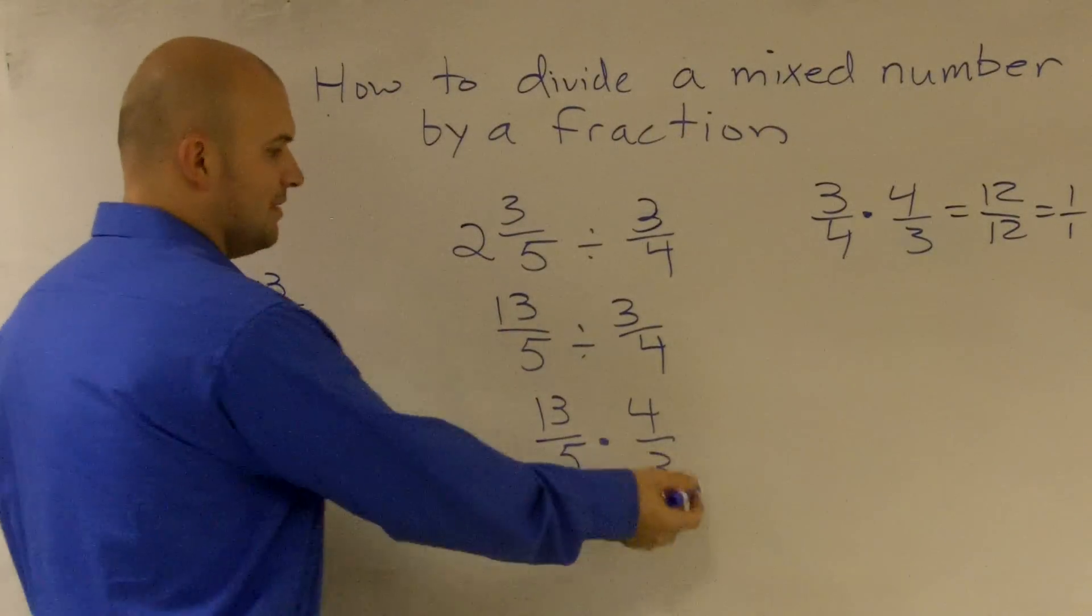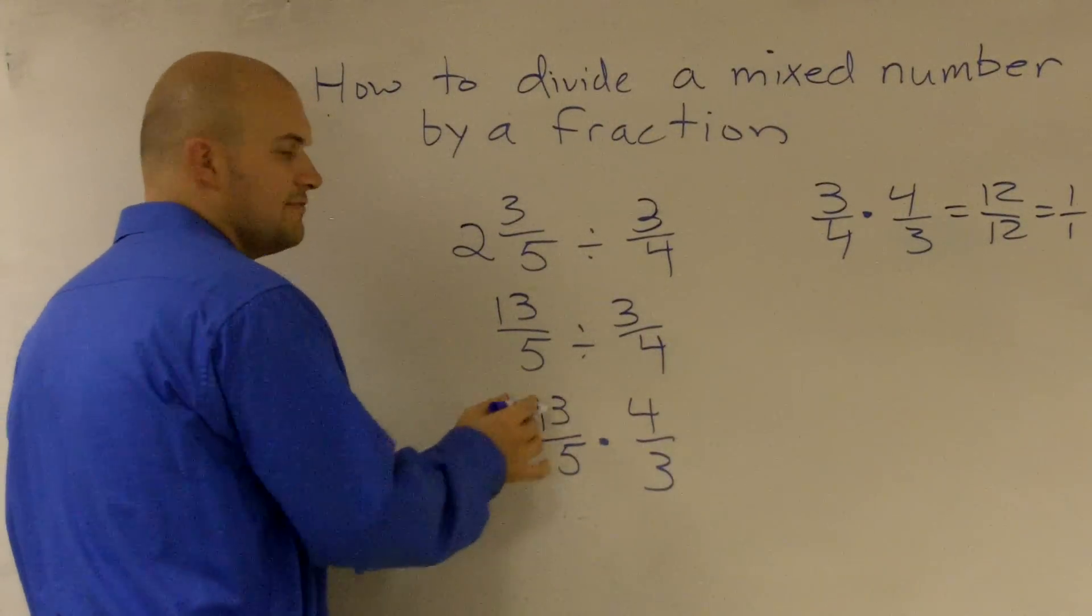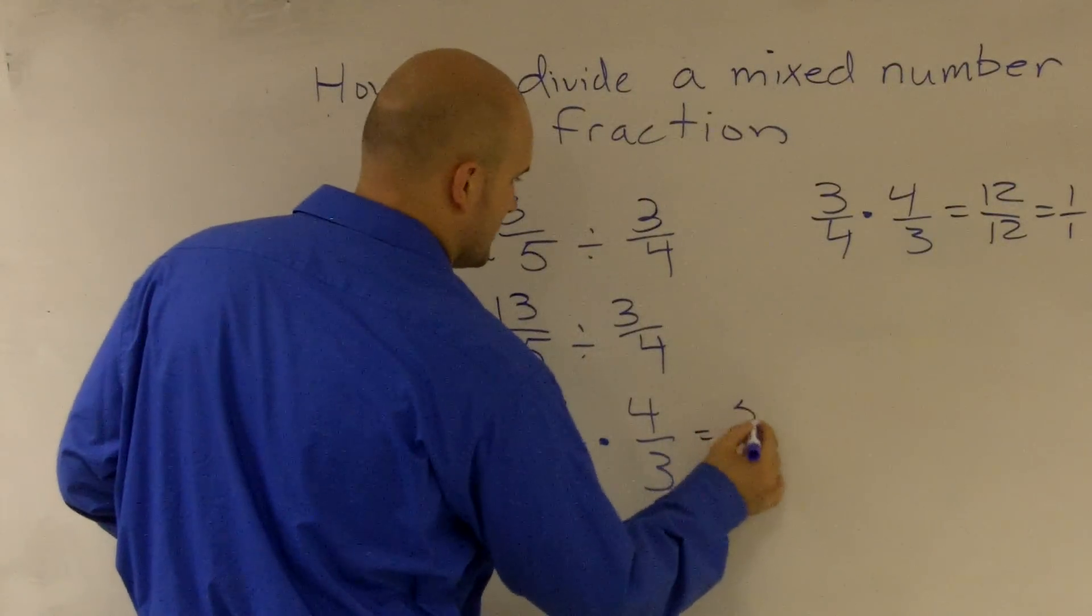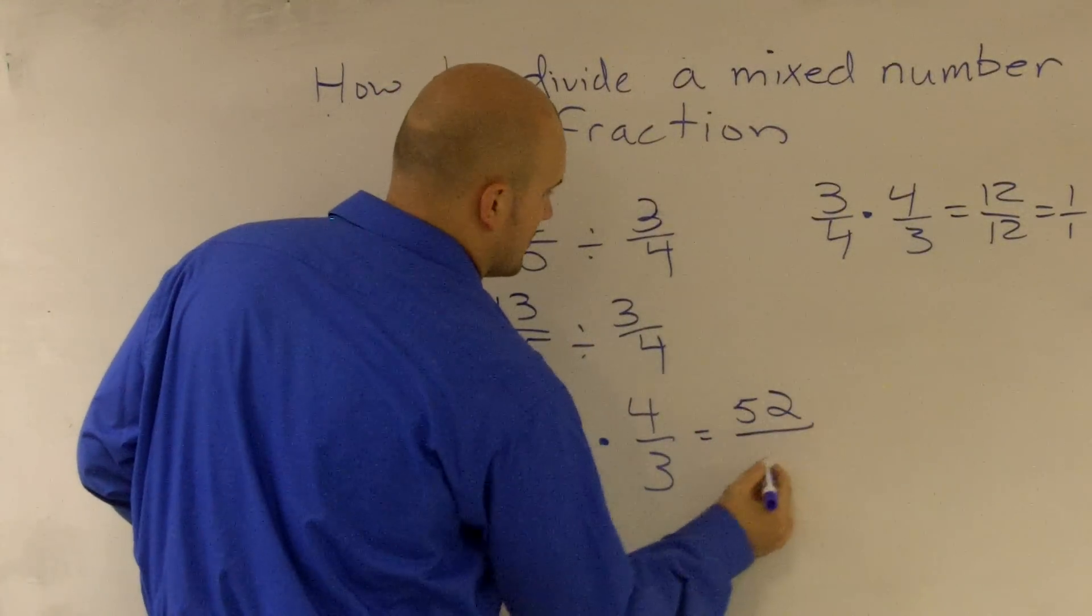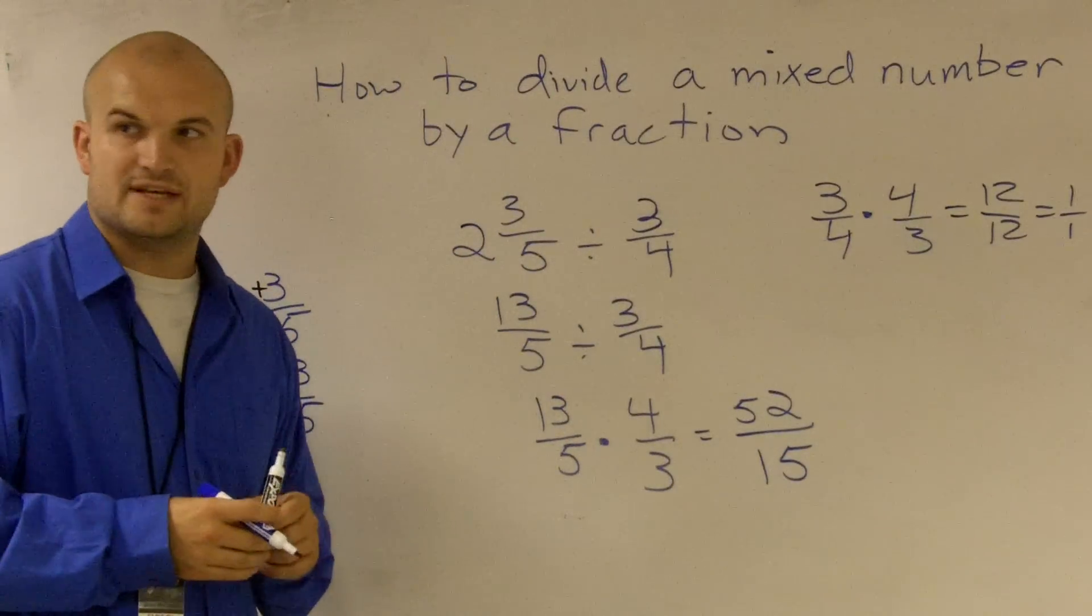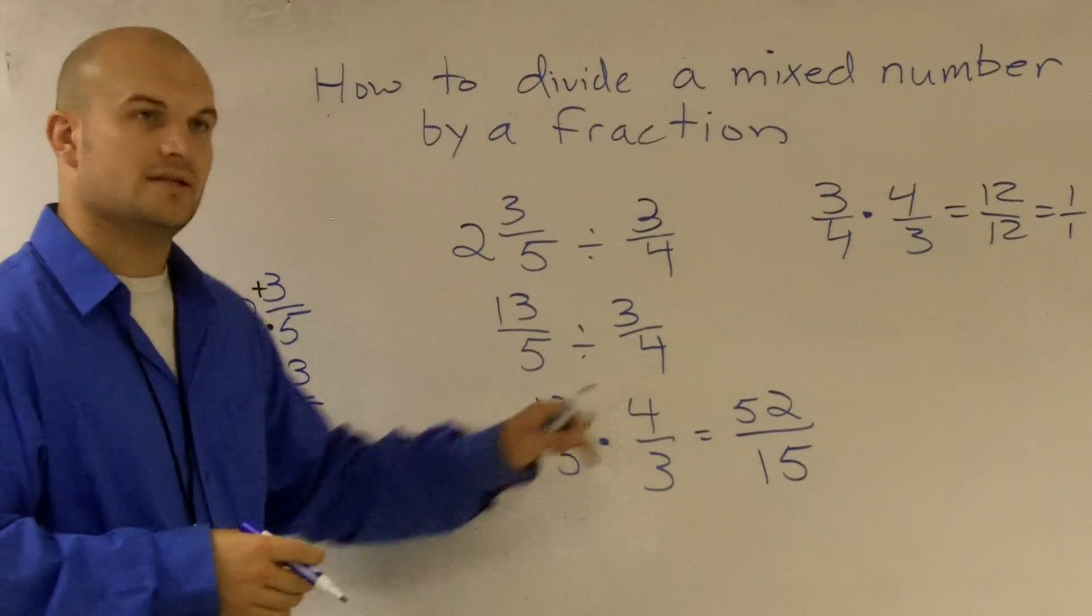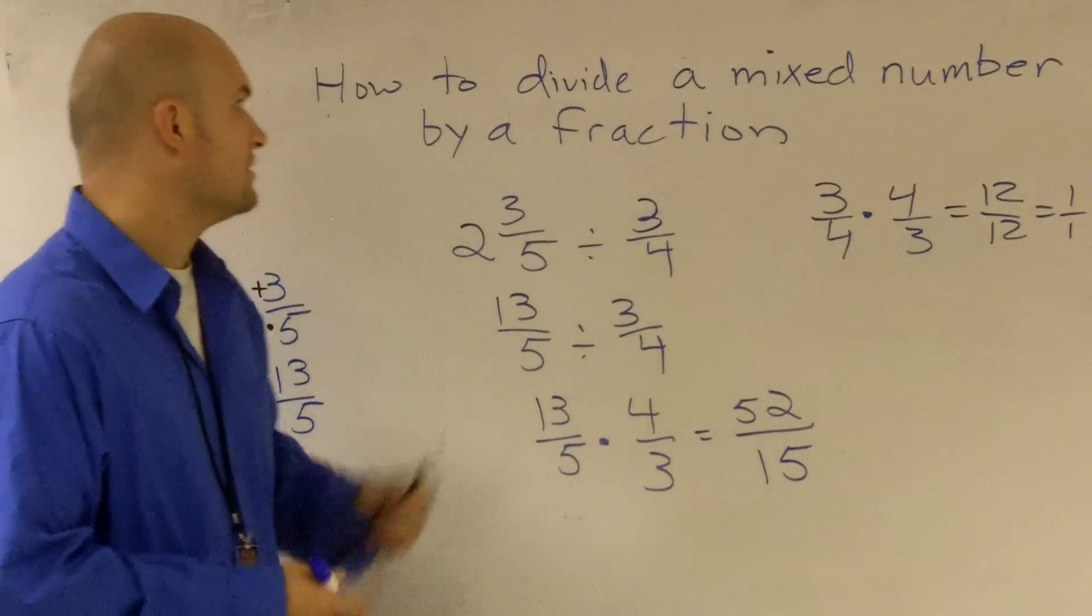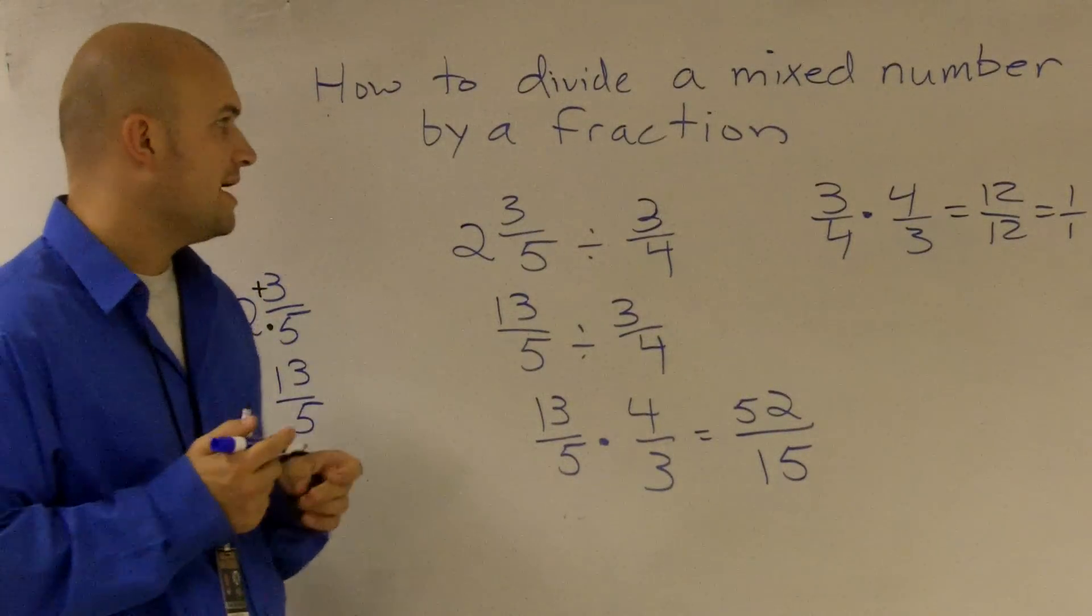So I multiply by the reciprocal and have 13 times 4 is going to be 52 over 15. I'm going to leave my answer as a mixed number. So that's how you divide a mixed number by a fraction.